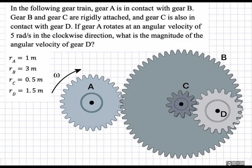This question involves four gears. Gear A meshes with gear B. Gear B and gear C are rigidly attached. Gear C and gear D mesh together. An angular velocity of five radians per second is applied to A, and we're asked to find the magnitude of the angular velocity of gear D with the following dimensions.